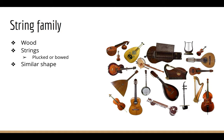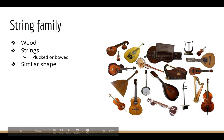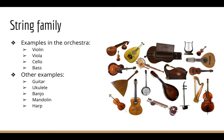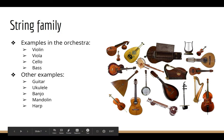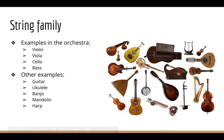Let's start with the string family. Instruments in the string family are usually made out of hollow wood, and sound comes from the vibrating strings. The strings will vibrate when they are plucked or bowed. Many string instruments are similarly shaped. Orchestra examples include the violin, the viola, the cello, and the bass. Other examples include the guitar, the ukulele, the banjo, the mandolin, and the harp.